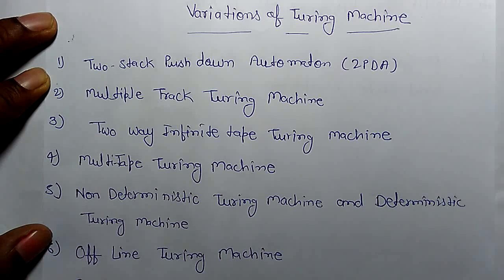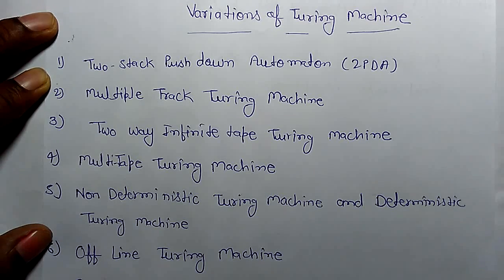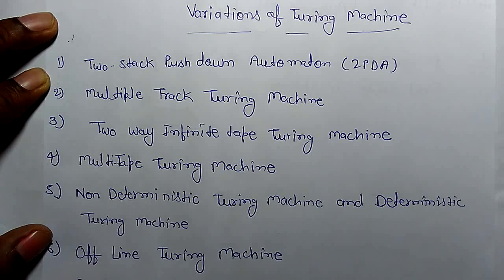For example, there is a 2-stack pushdown automaton. As we know, a PDA is a machine for context-free languages. But if we add an extra stack to that PDA, we can use the complete machine as a Turing machine.